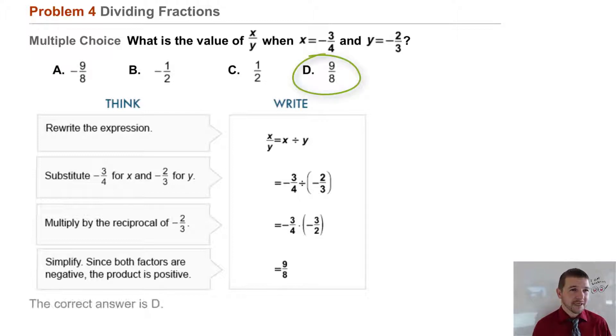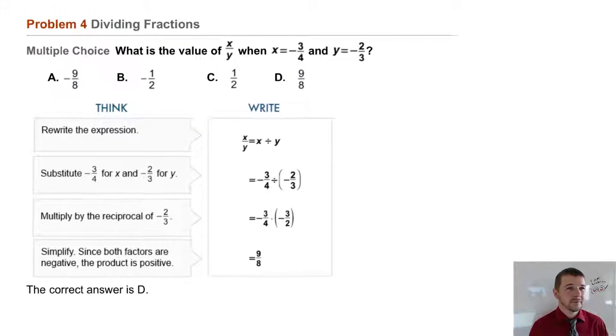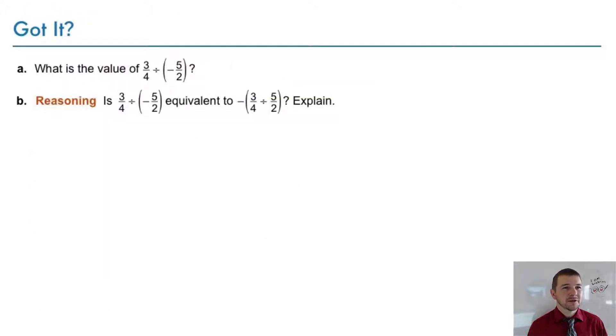Your turn. Part a: What is the value of 3/4 divided by -5/2? And part b, a reasoning item: Is 3/4 divided by -5/2 equivalent to the negative of (3/4 divided by 5/2)? Explain.